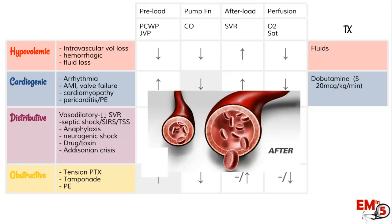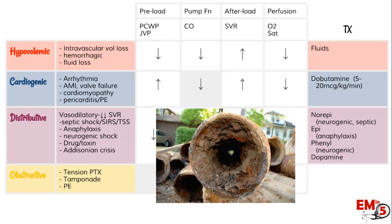For our distributive shock patients — septic shock, anaphylaxis — these are the patients you would consider starting pressors on. You're also going to give them fluids to make sure they're topped off, but they might need something more. In septic patients, our first go-to is probably norepinephrine. For anaphylaxis, we think of epinephrine. In neurogenic shock patients, either phenylephrine or norepinephrine is going to be your go-to, and you can also try dopamine.